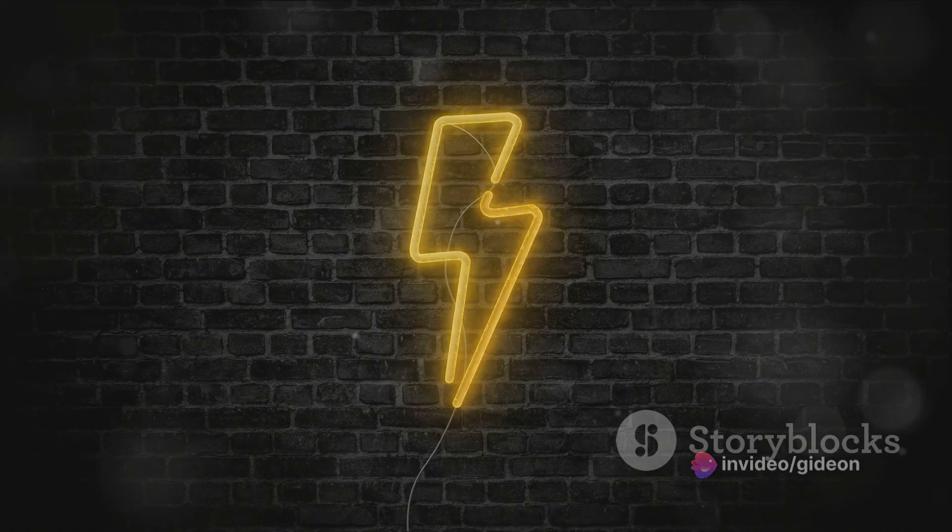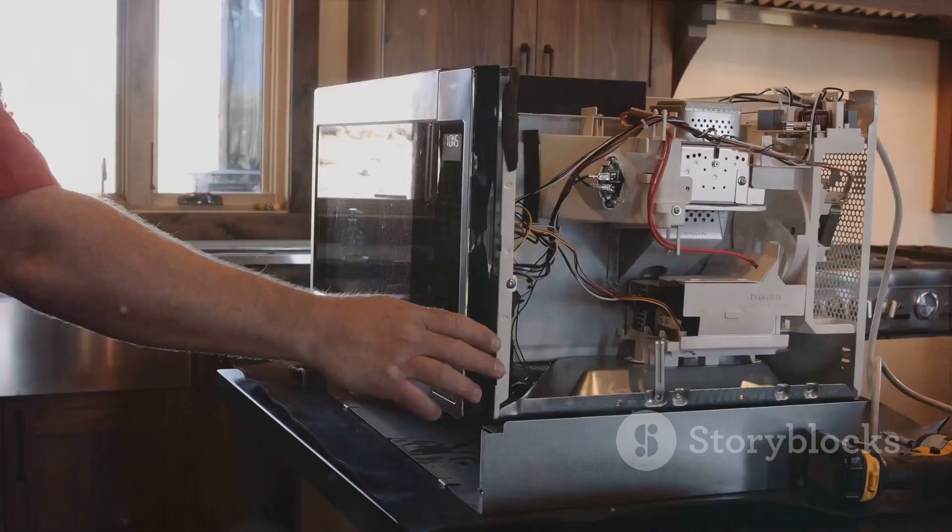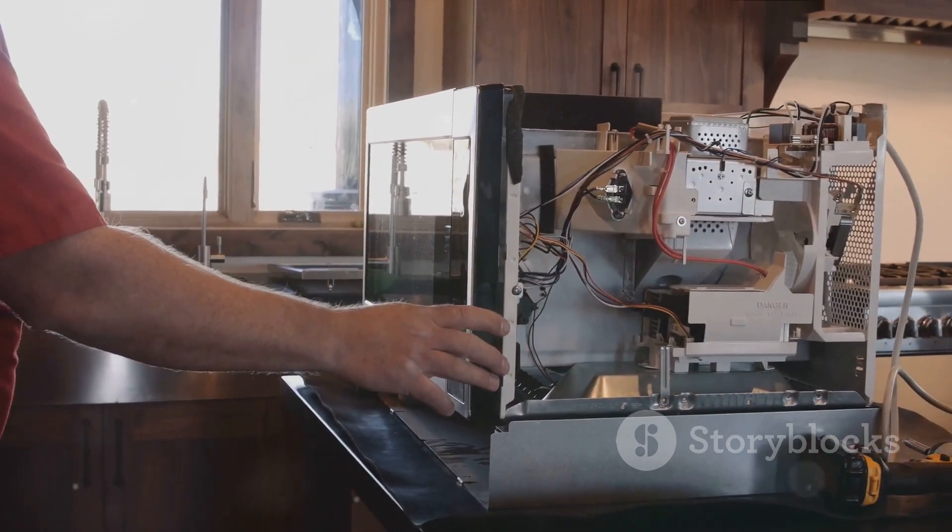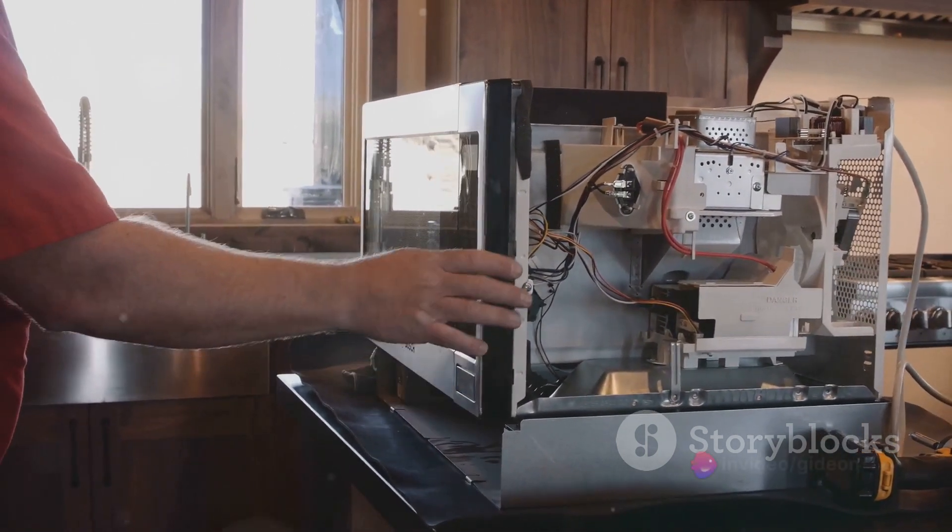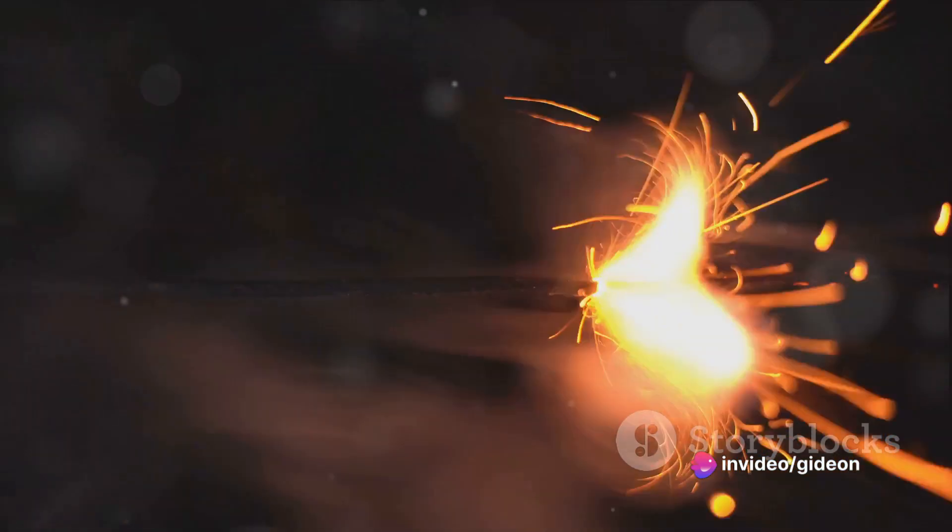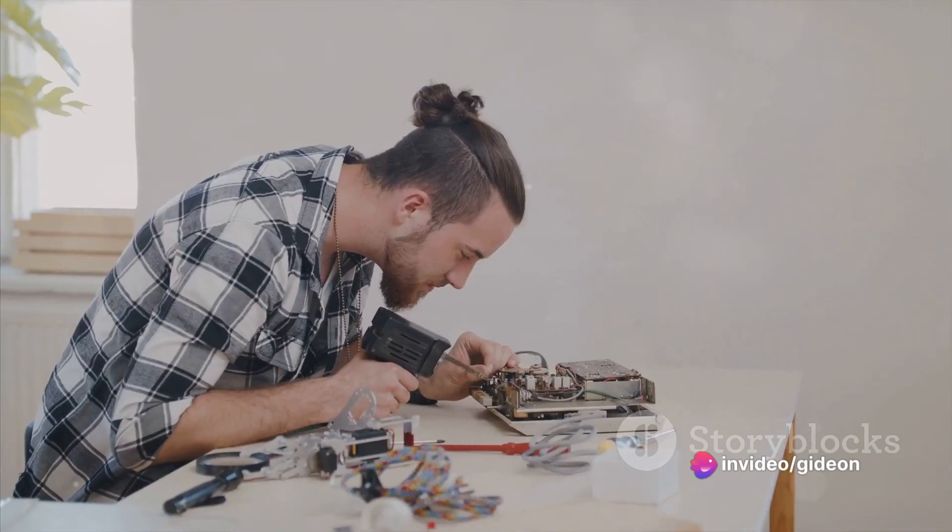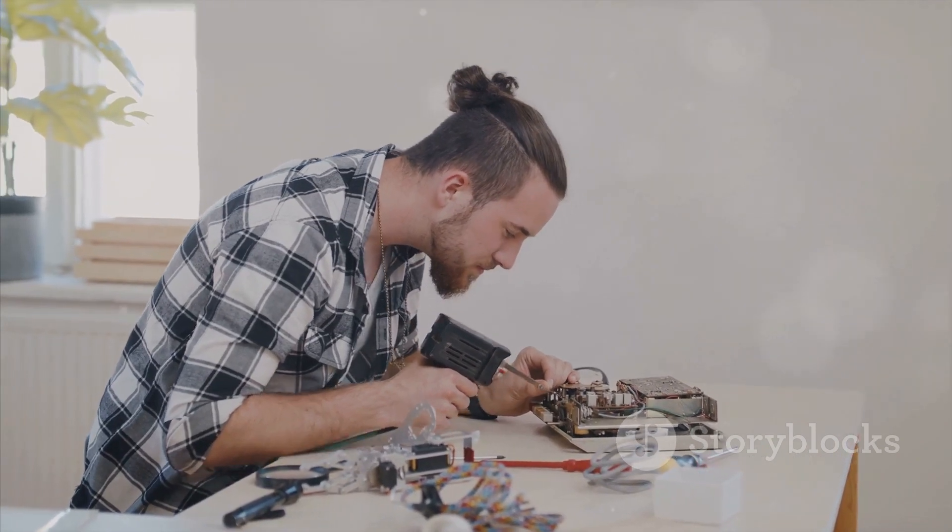The second step is to check all electrical appliances regularly, ensure they are functioning correctly and their cords are not frayed or damaged. A damaged cord can cause a spark, which can lead to a fire or a shock. If an appliance is not working correctly or the cord is damaged, replace it immediately.